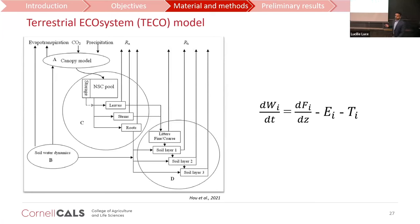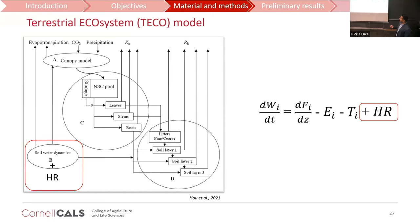The model I will use for hydraulic redistribution is the TECO model, which has canopy photosynthesis, plant growth, transfer of litter from plant to soil, and soil water dynamics. I will modify the soil water dynamics by adding hydraulic redistribution. In the original model, water dynamics are represented by unsaturated water flow, evaporation, and transpiration. I will add the extra hydraulic redistribution — movement of water from wet region to dry region through roots.